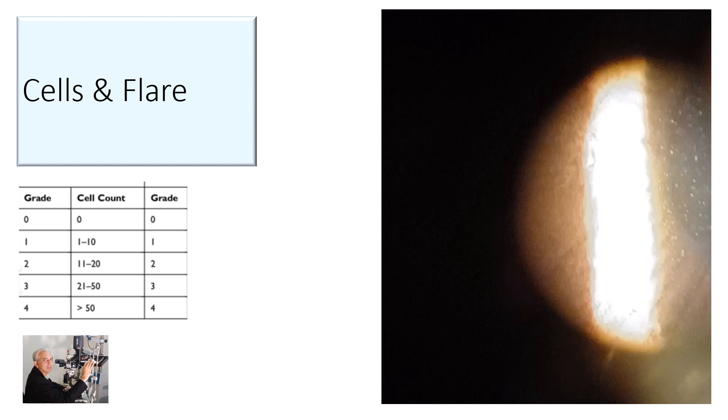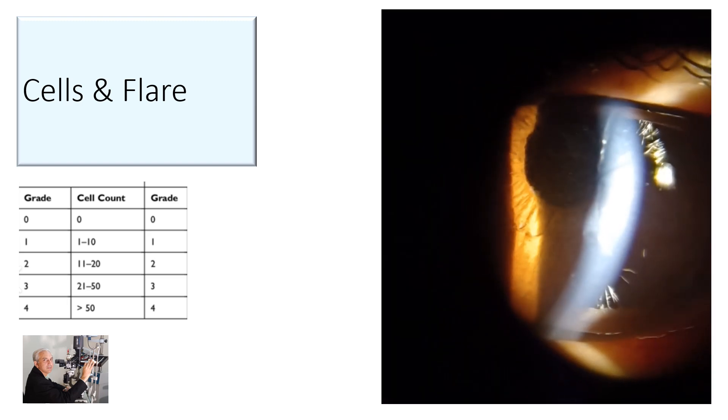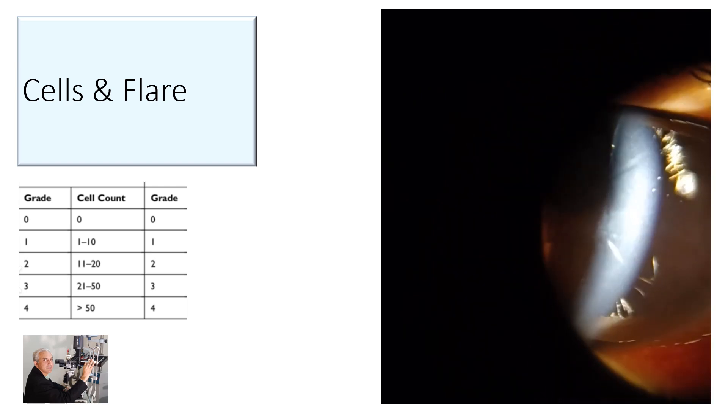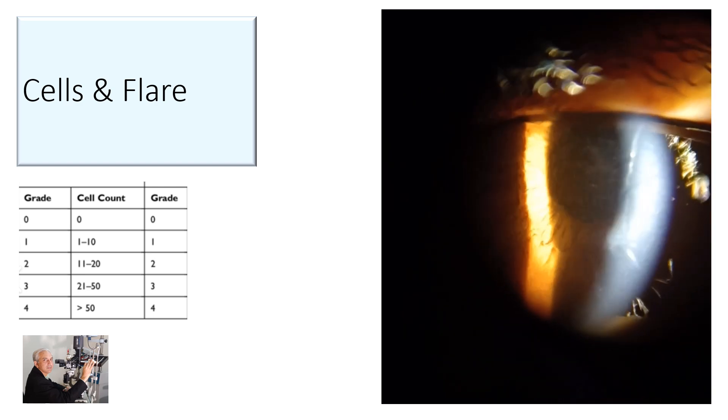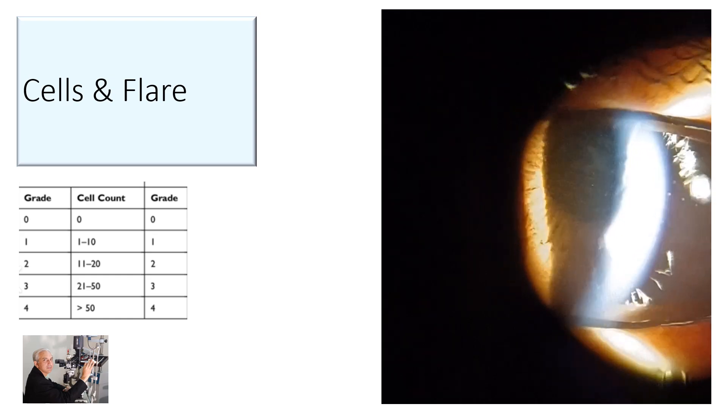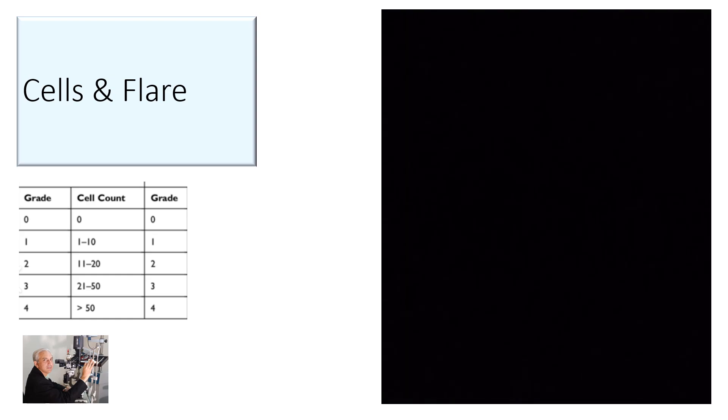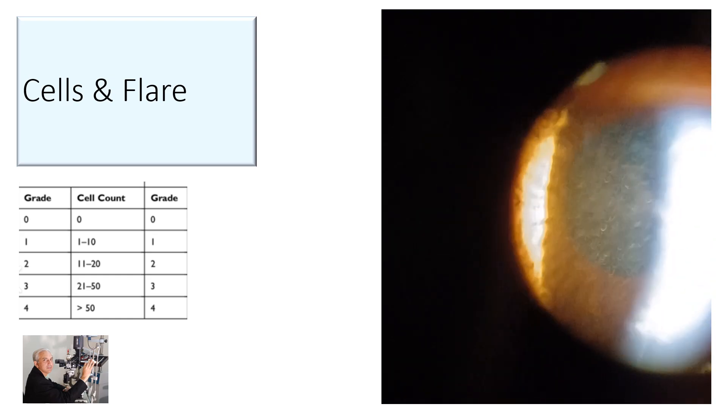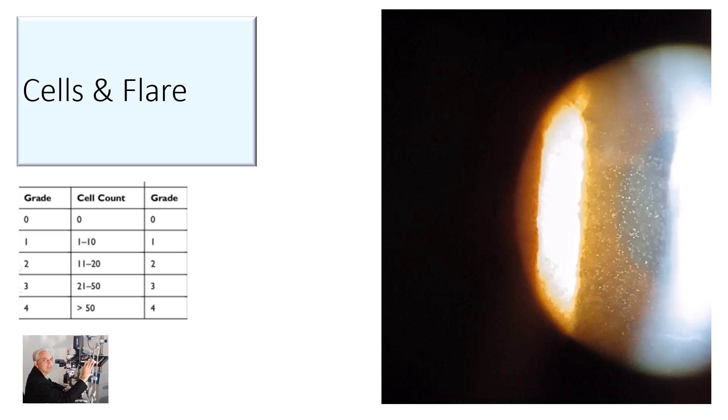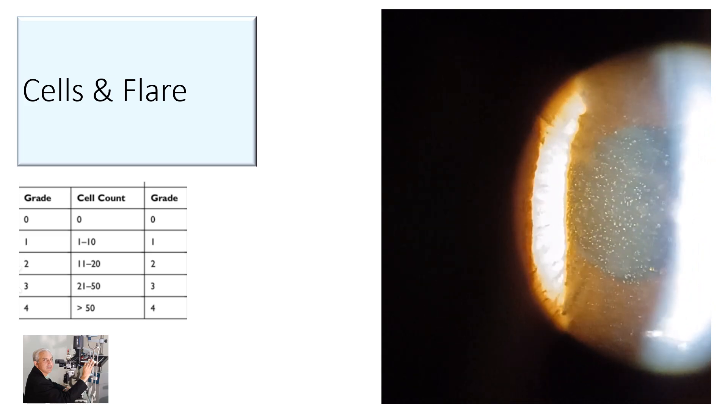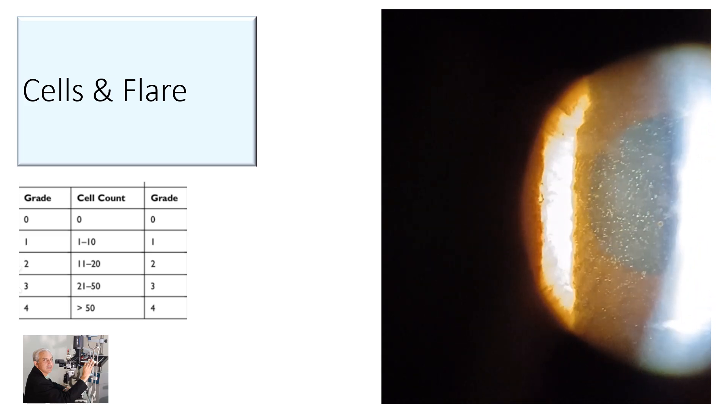You need to understand the grading of cells in the anterior chamber. In this patient, the cells which you see in the anterior chamber are quite a lot. You need to get that beam down to two millimeters and then count the number of cells in that area. There are a lot of cells in this area, so probably this will go into grade three or grade four uveitis.